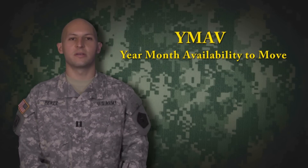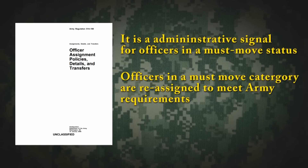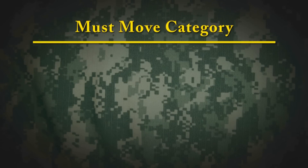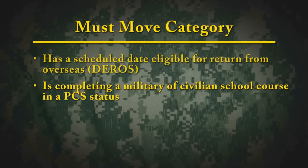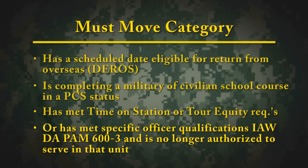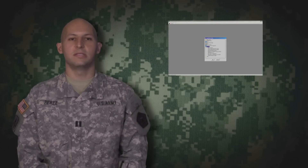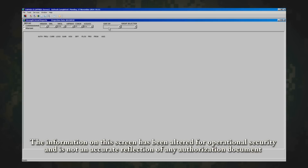Per AR 614-100, the YMAT is an administrative demand signal for officers in a potential must-move status. HRC and other DA assignment agencies reassign officers who are in a must-move status in order to meet Army requirements. An officer in a must-move category is one who has a scheduled date eligible for return from overseas (DROS), is completing a military or civilian school course in a PCS status, has met time on station or tour equity requirements, or has met specific officer qualifications in accordance with DA PAM 600-3 and is no longer authorized to serve in that unit. To look at the YMAT report, the Detail Strength Report by Conger in Topness, G1s and S1s should drill down into the unit's officers by control grade and branch, and ensure that the YMAT field supports the commander's guidance with respect to the officer development model in DA PAM 600-3.